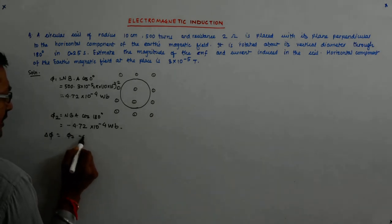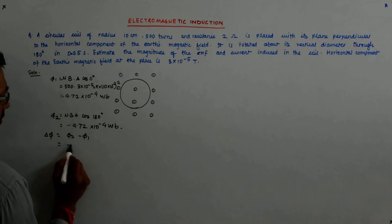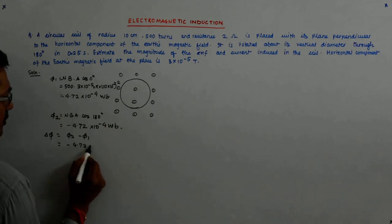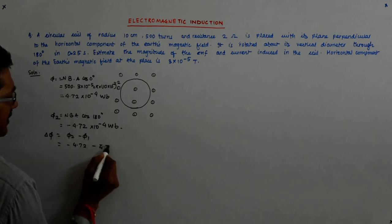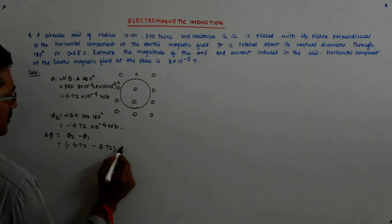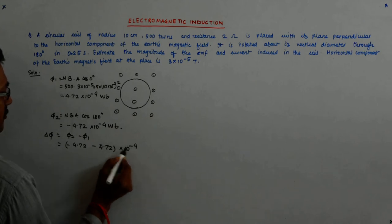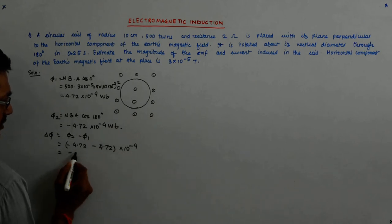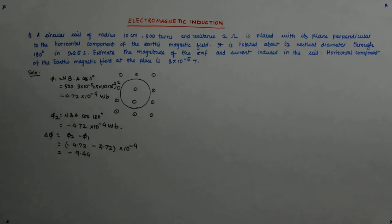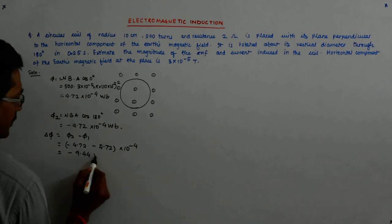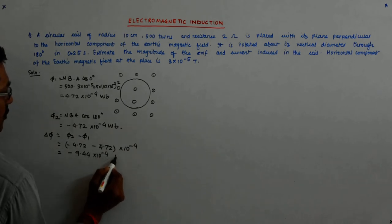Now, what is the change in the flux? That is nothing but φ₂ minus φ₁, which is -4.72 minus 4.72 × 10^-4, which is -9.44 × 10^-4 Weber.